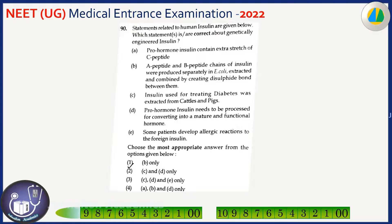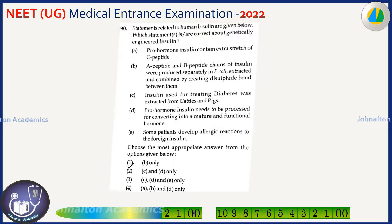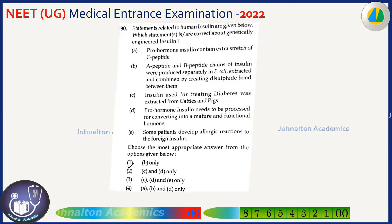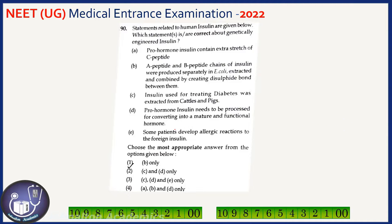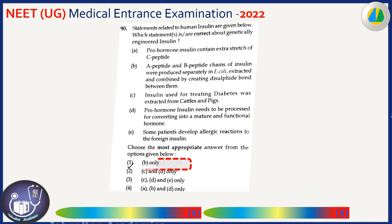Statements related to human insulin are given — which are correct about genetically engineered insulin? Pro-hormone insulin carrying a C-peptide is not specific to genetically engineered insulin. The A and B chains of insulin were produced separately, extracted, and combined — this is correct for genetically engineered insulin. Using animal insulin to treat diabetes and processing of pro-hormone insulin both refer to natural insulin, not genetically engineered. So only statement B is correct, making the first option the correct answer.